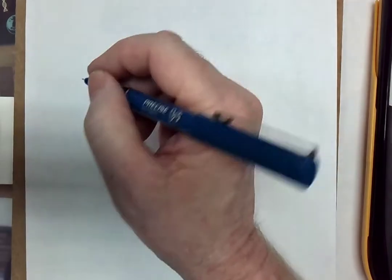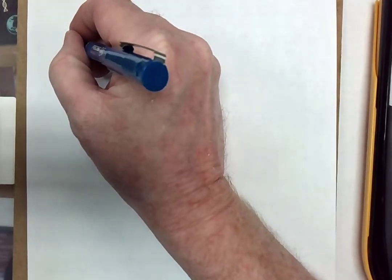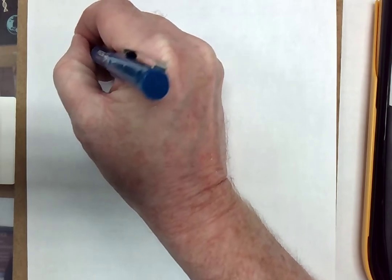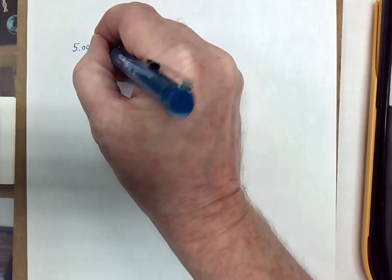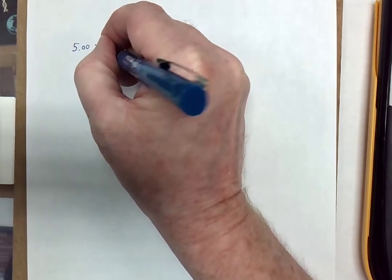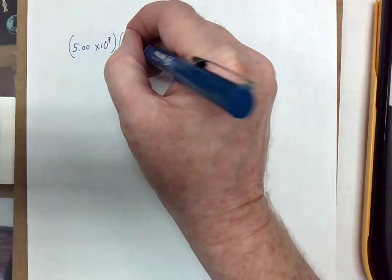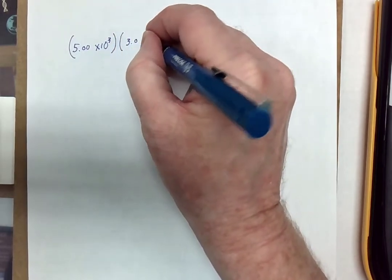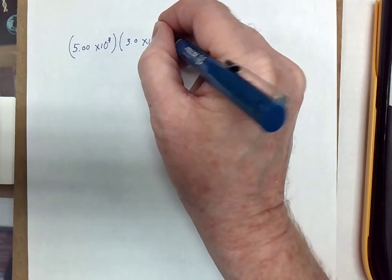So the first thing is, let's define the problem that we want to do. I want to do 5.00 times 10 to the third multiplied by 3.0 times 10 to the fifth.